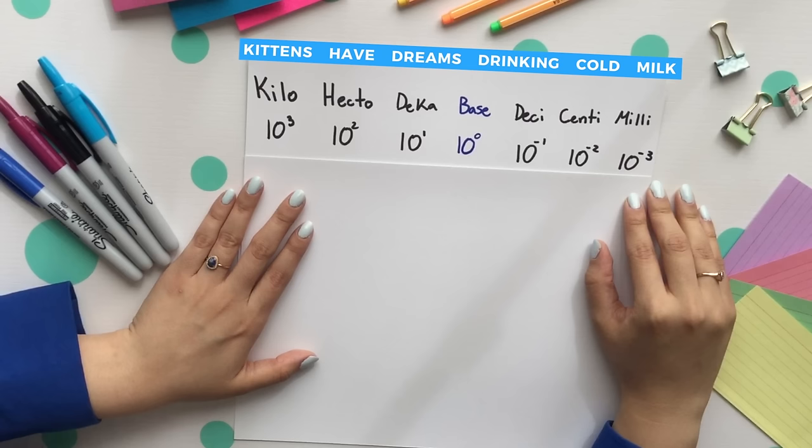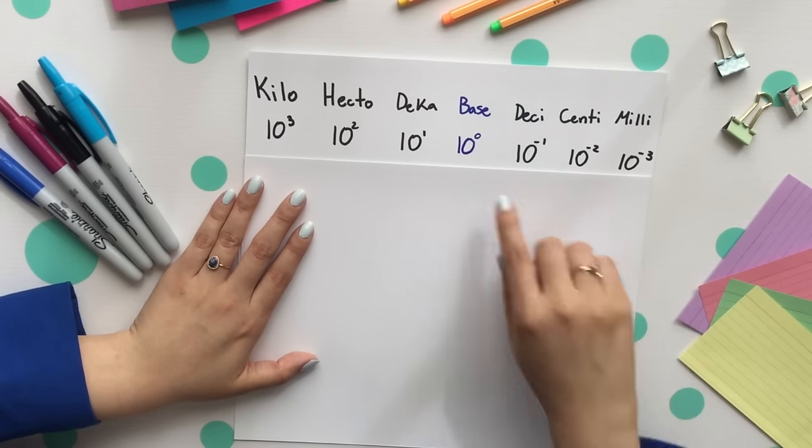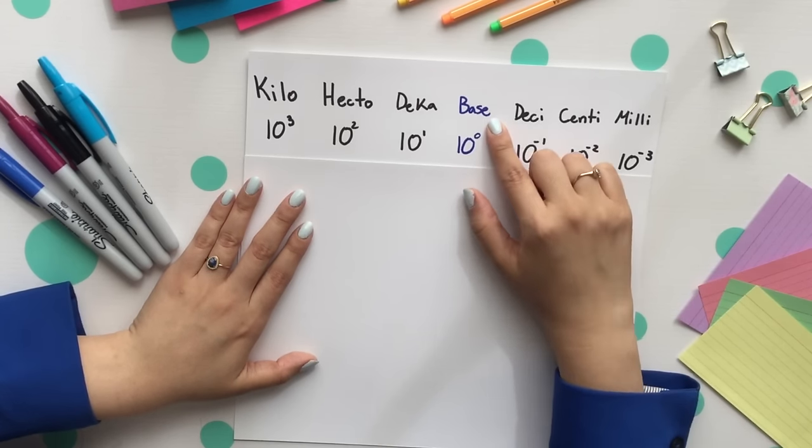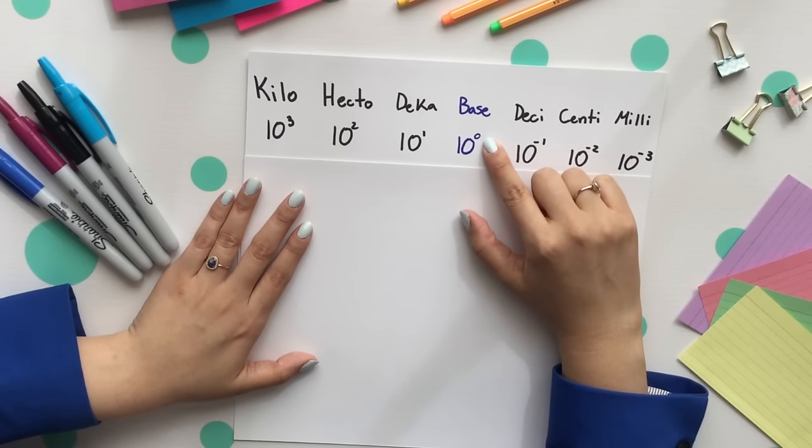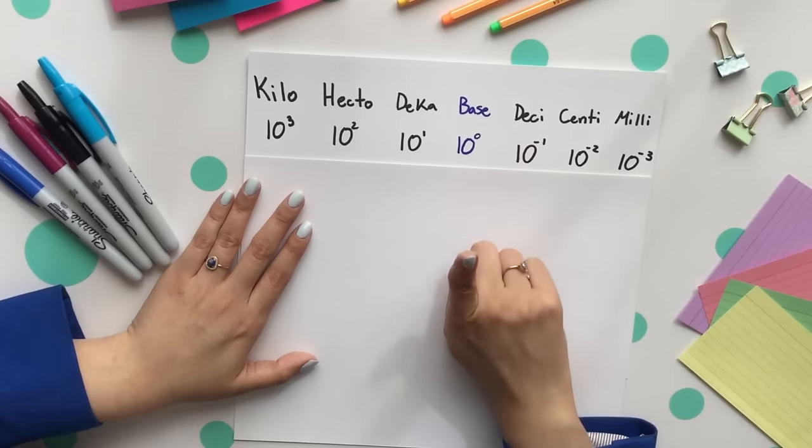Looking here, we see the most common units used. I also want to make a note that 10 to the zero power is just our base. We'll get into that later in the video. 10 to the zero just means that it's one. Anything raised to the zero power is one.